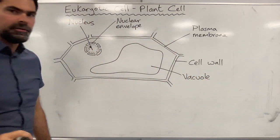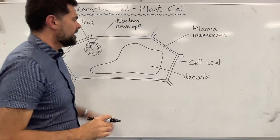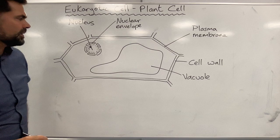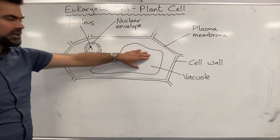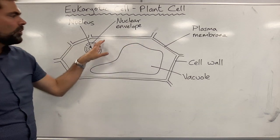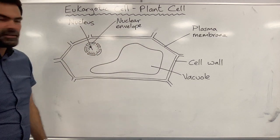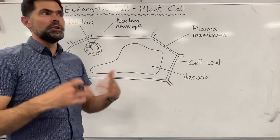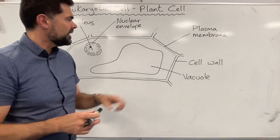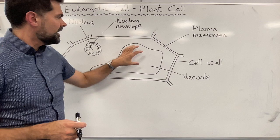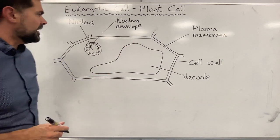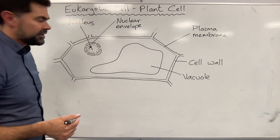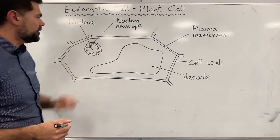The function of the vacuole can vary a lot depending on the particular cell and where it is in the plant. It can be used for storage of certain compounds, and also as a place where waste products go — because plants don't have a urinary system like mammals do, and waste products are stored in the vacuole. Animal cells can also have a vacuole, but it's normally pretty small.